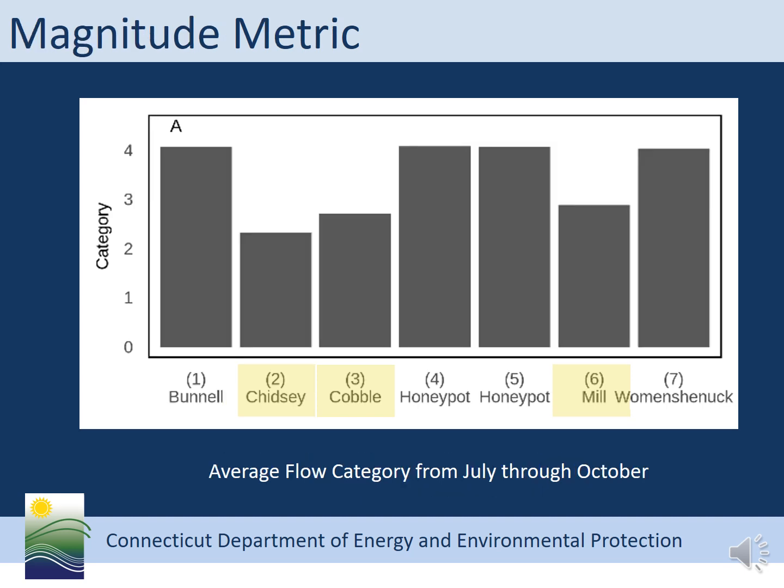Here's an example of the magnitude metrics — the average flow from July through October. This figure shows that four of these streams had an average flow category of four, whereas the other streams had an average flow category between two and three.